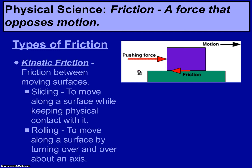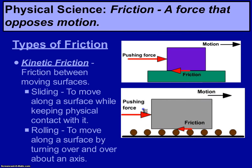There are two different kinds of kinetic friction: sliding friction — moving along a surface while keeping physical contact with it, such as moving your chest of drawers or a couch — and rolling friction, which is moving along a surface by turning over and over about an axis, like wheels. There is still a little bit of friction on wheels, but considerably less than sliding along a surface.